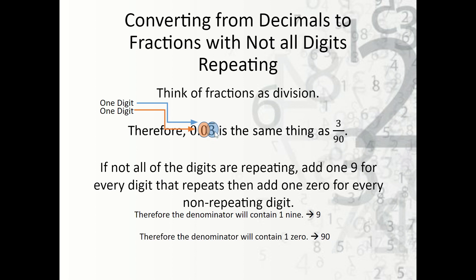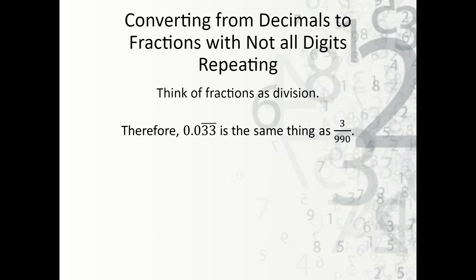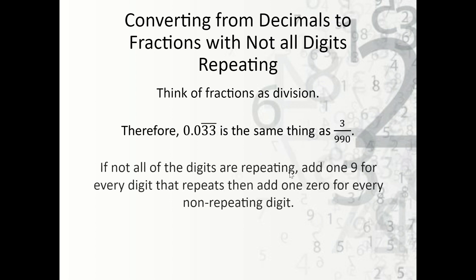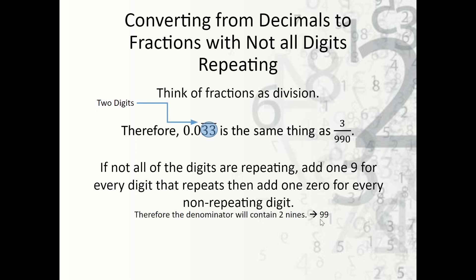Then we keep whatever the numerator value is — three — so that becomes three over 90. Now for 0.033 repeating, that should end up being 33 over 990. Using our rule: two digits are repeating, so that's two nines — 99; one digit is not repeating, so that's one zero — giving 990. We keep the numerator value of 33, so it's 33 over 990.